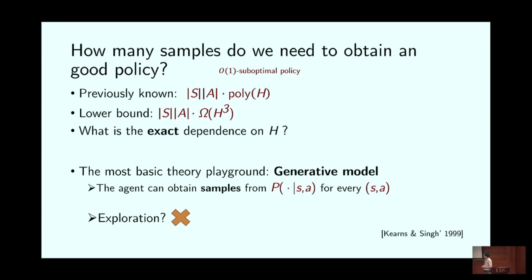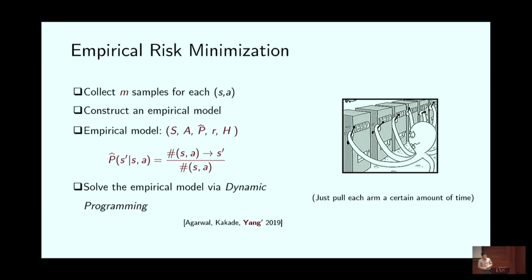For this simple setting, the most natural algorithm is empirical risk minimization. We grab a bunch of samples from each state-action pair, then use these samples to estimate an empirical model. We count how many transitions go from one state to another, divide by the total, and get an empirical probability estimate. Using this empirical model, we apply dynamic programming to solve it, getting a policy and value function.